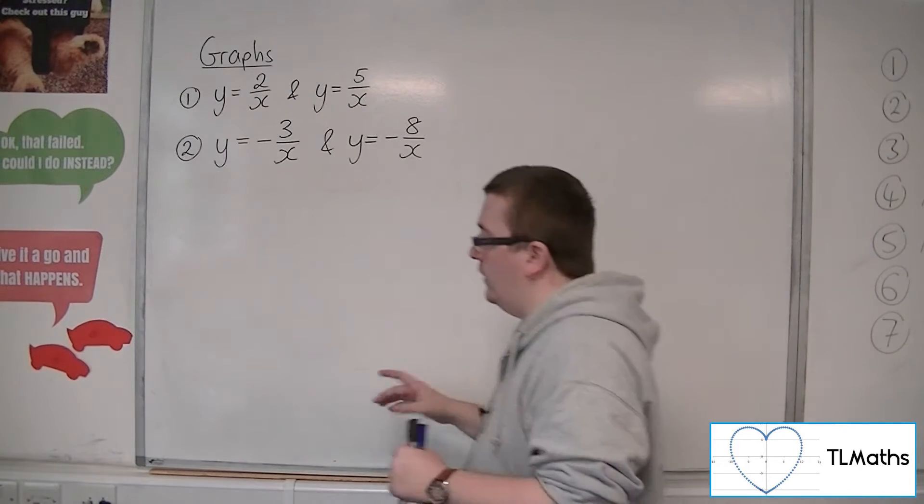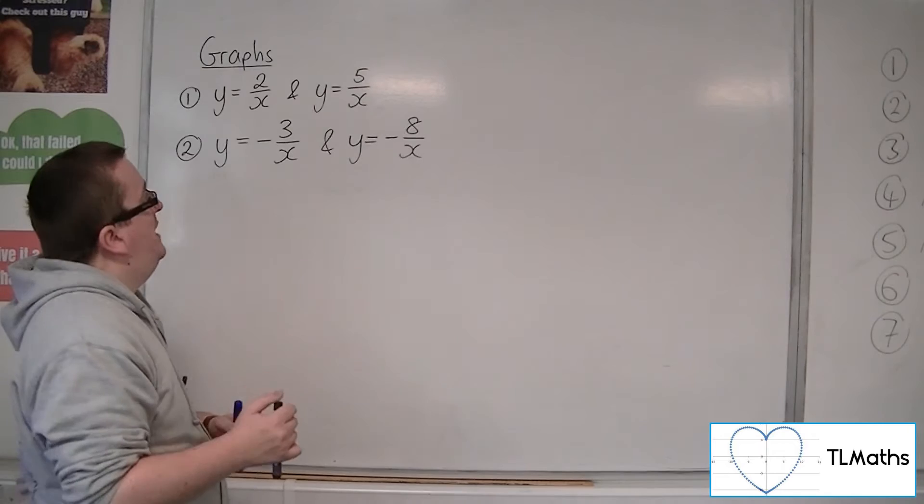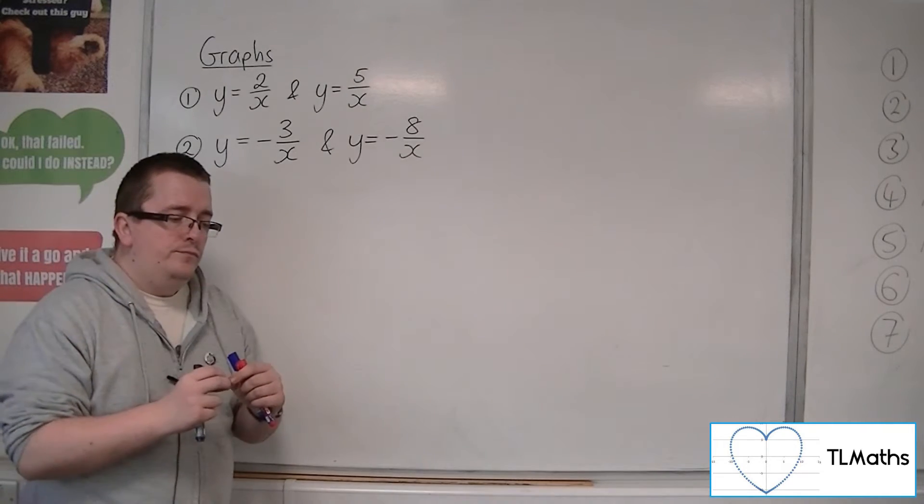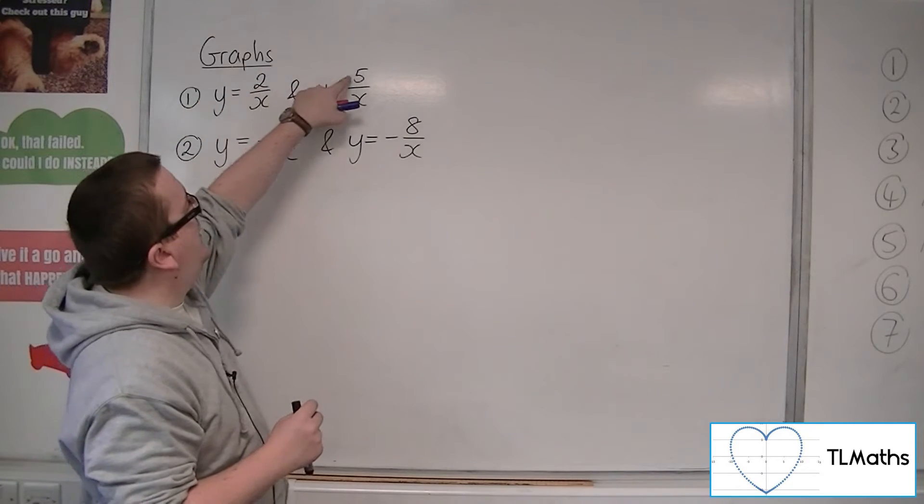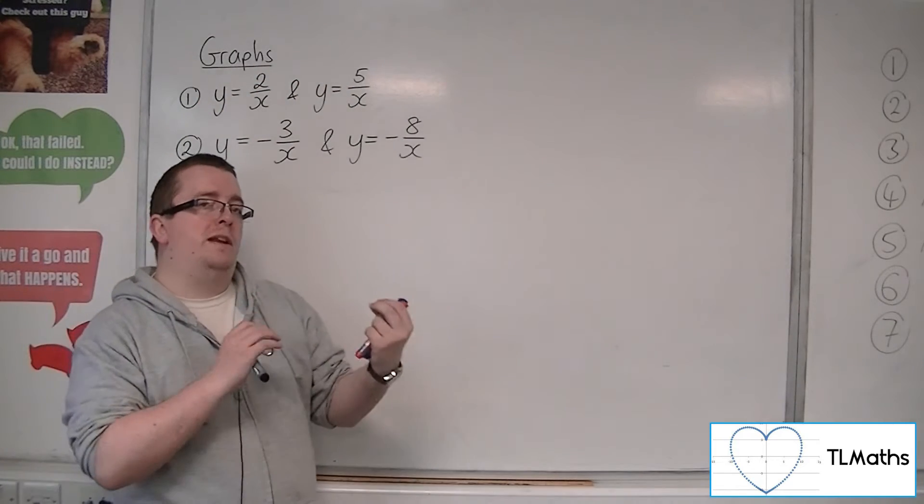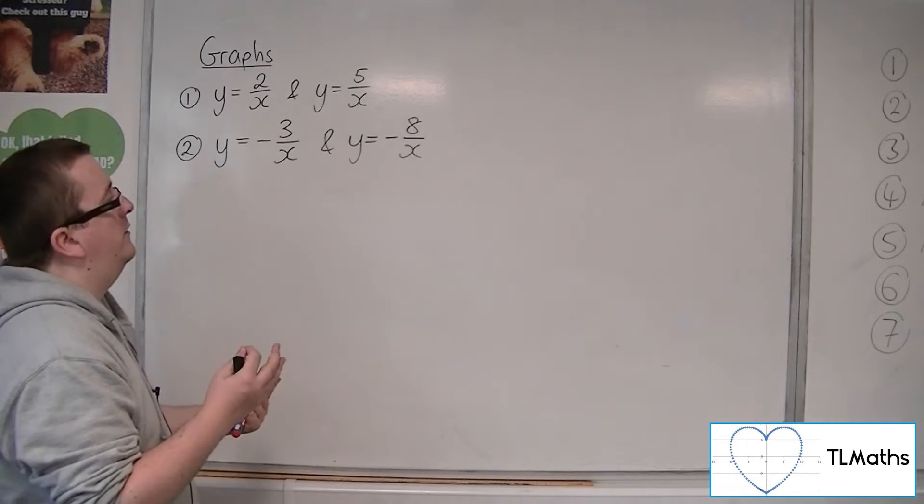So really we want to know what will that 2 and that 5 do differently to the graph. How is it changing the graph?